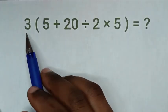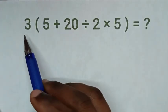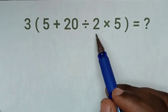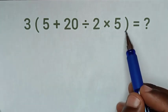Hello, how to solve this math problem which is 3 bracket 5 plus 20 divided by 2 times 5 bracket.